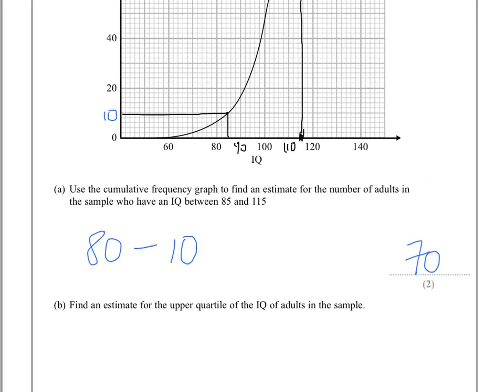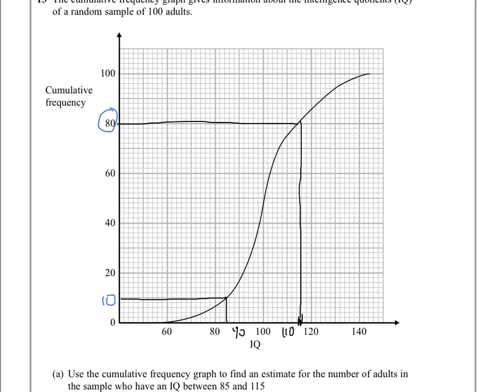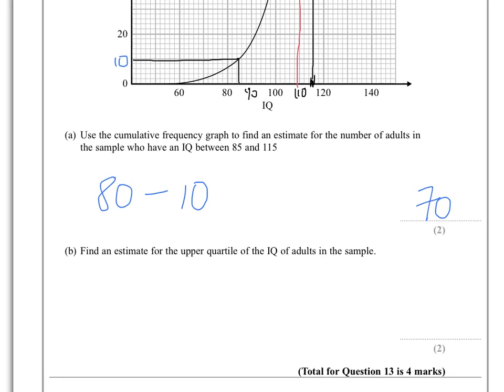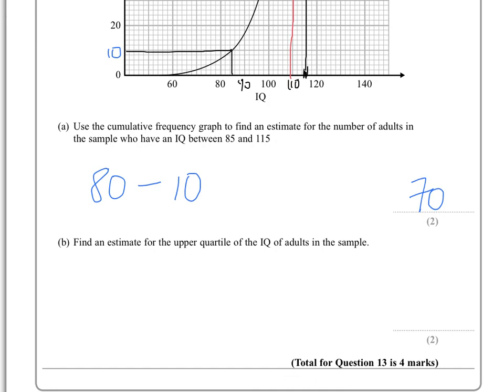We have to go to the 75th percentile, which in this case is quite easy because we've got 100 adults, so it would be at around 75. That will be, if that's 70, 75 will be about there. We just follow that along, forgive my drawing, wherever that hits, we follow that down, and that is 110. So an estimate for the upper quartile of adults in this sample is 110.